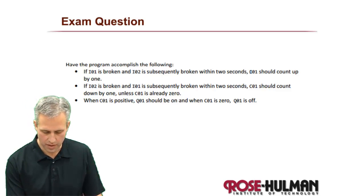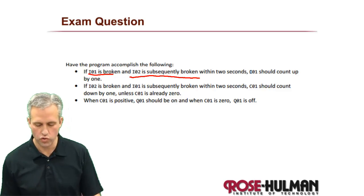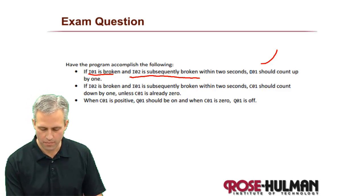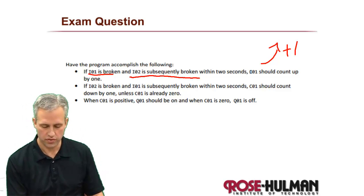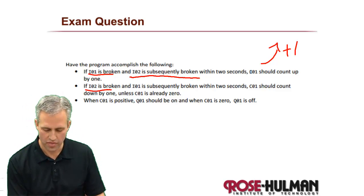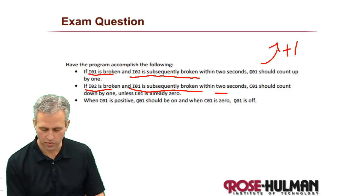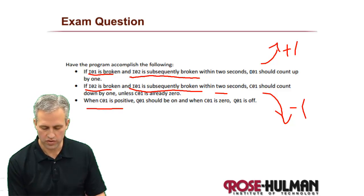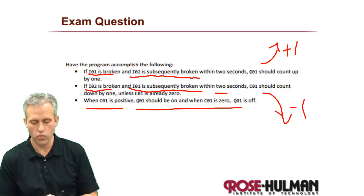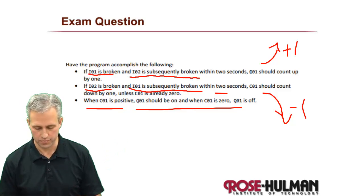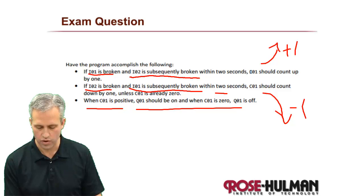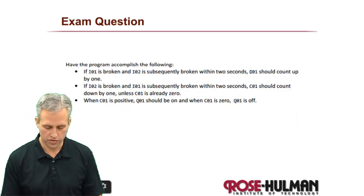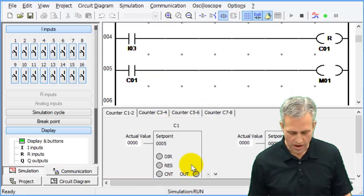If I1 becomes broken and then within two seconds I2 becomes broken, you count up by one. If the reverse order happens — I2 broken then I1 broken, again within two seconds — you count down by one. When C1 is positive, Q1 should be on; when it's zero, Q1 is off. Let's go ahead and open PicoSoft.